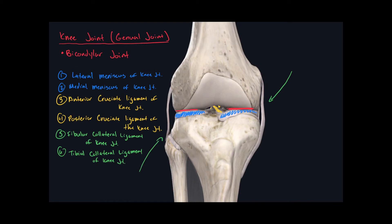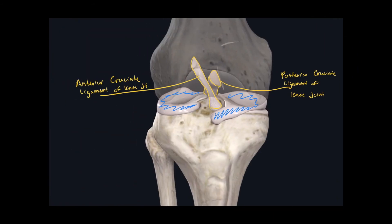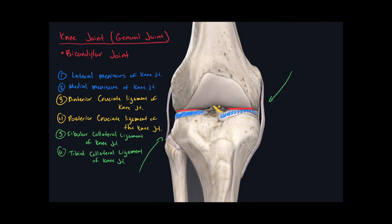The last joint component of the knee joint is located between the patella and the tibia. We can see a ligament spanning from the apex of the patella down to the tibial tuberosity. This is called the patellar ligament of the knee joint. That brings the total to seven different joint components found in the knee joint, which is why it is the most complex joint in the human body.